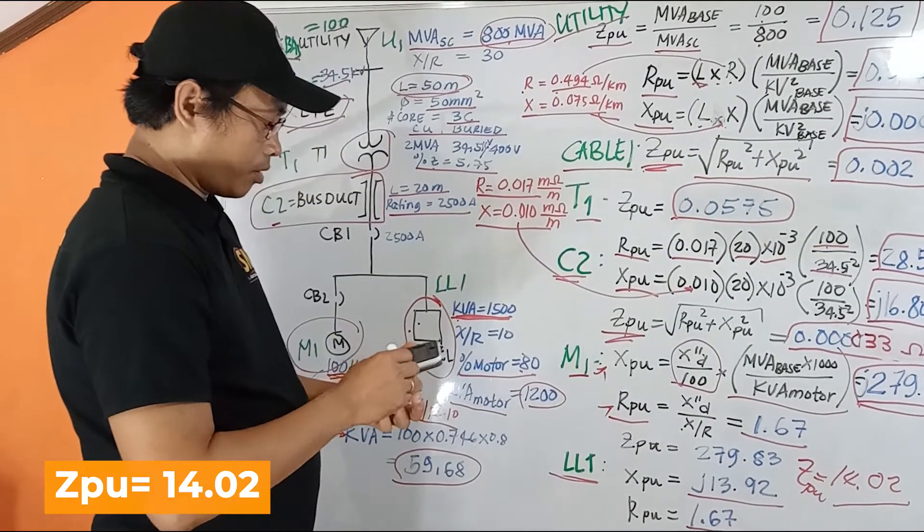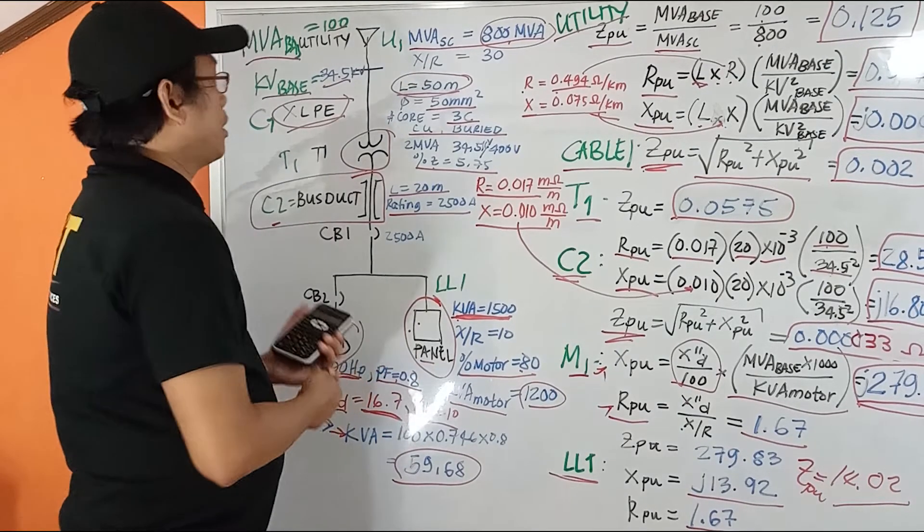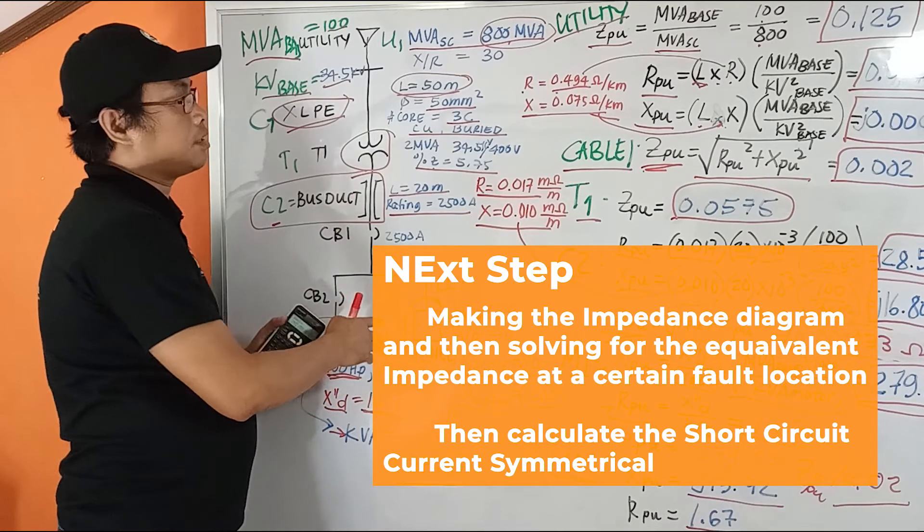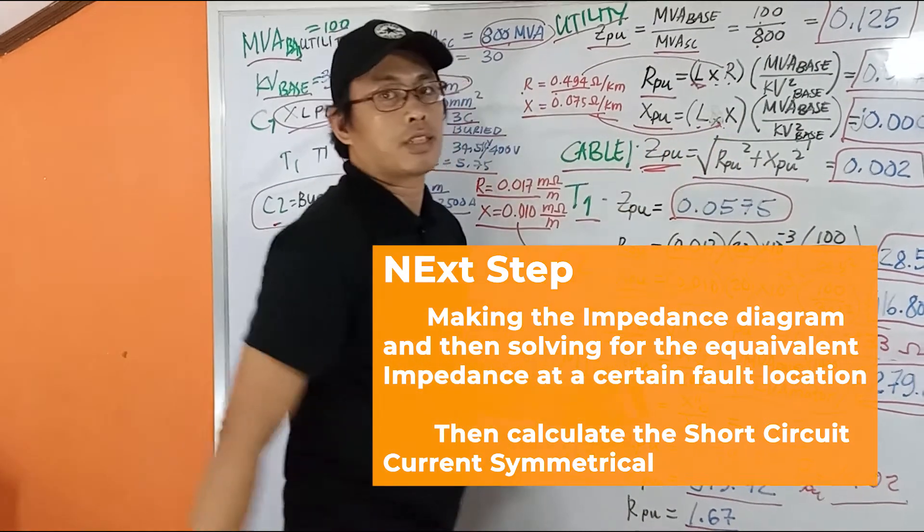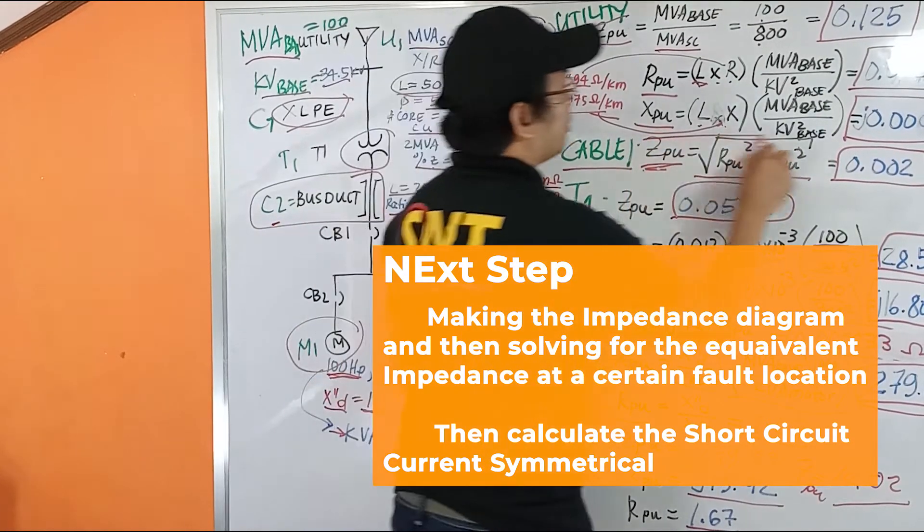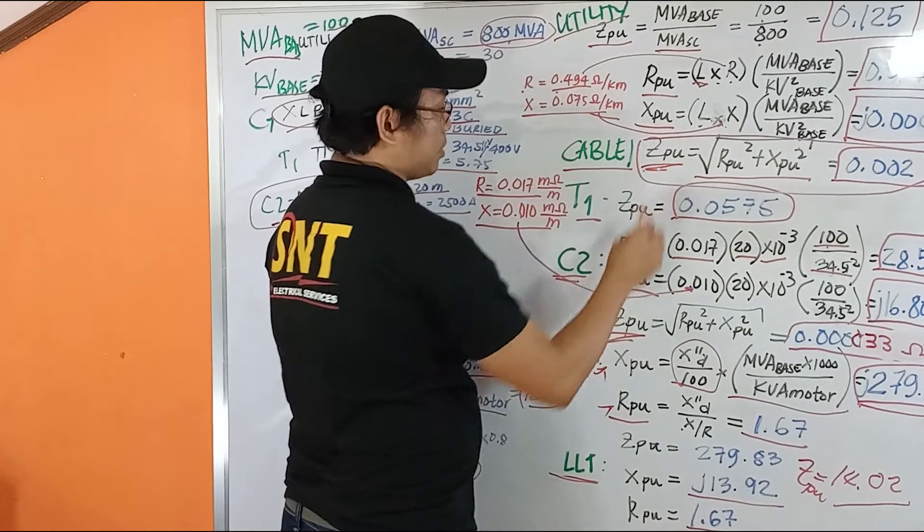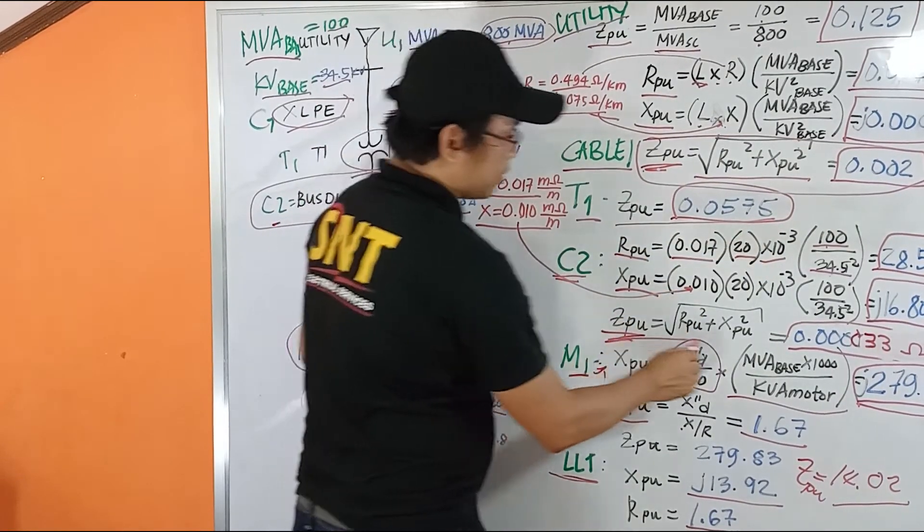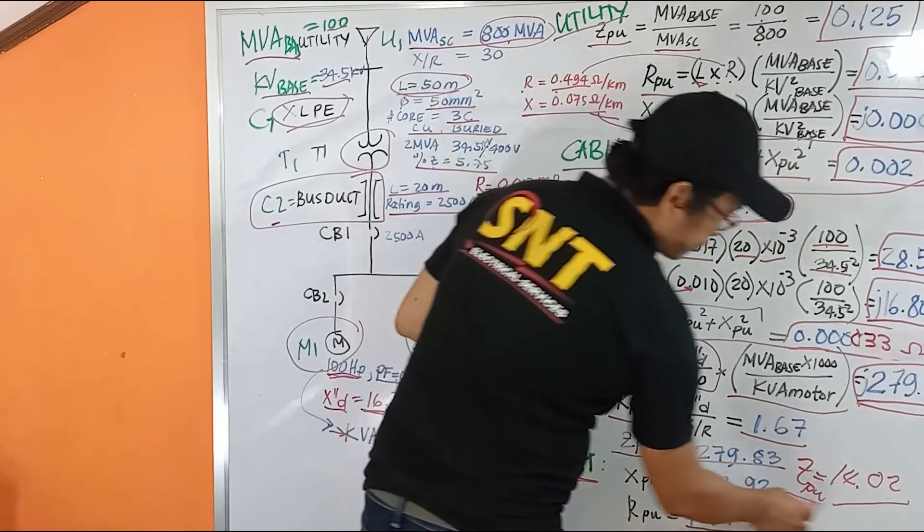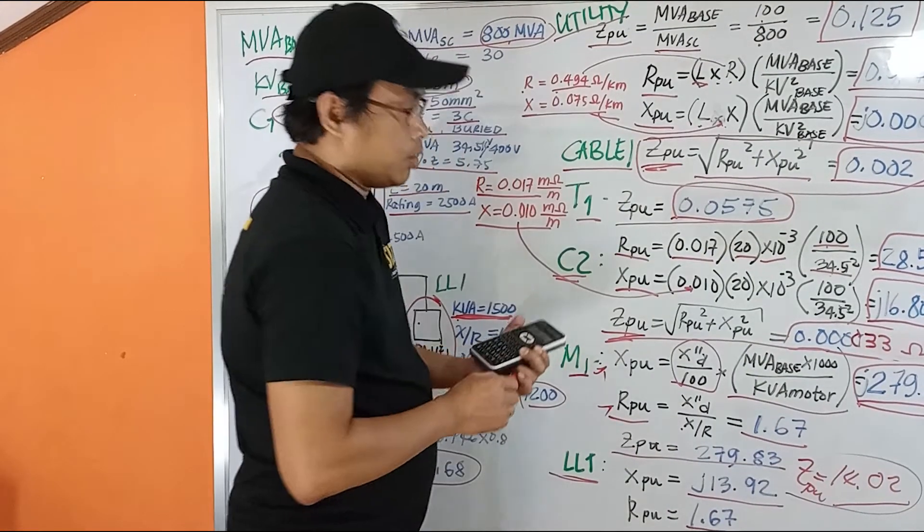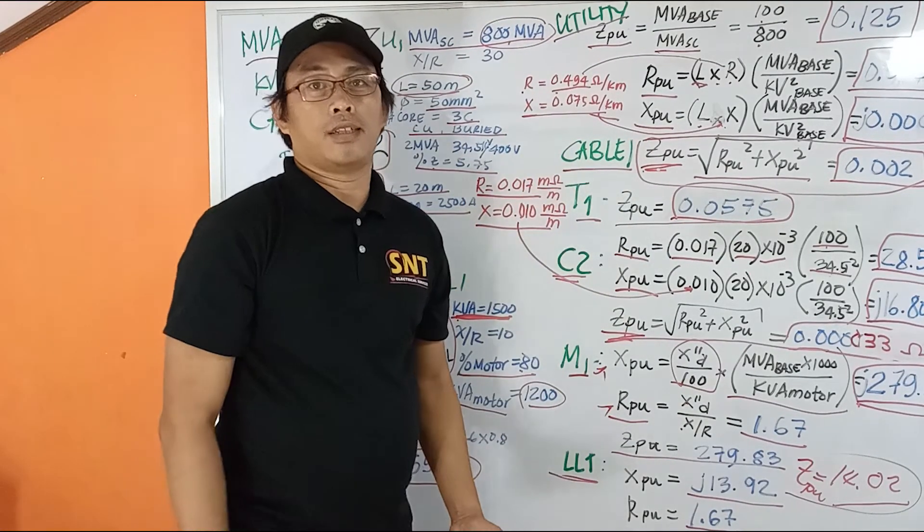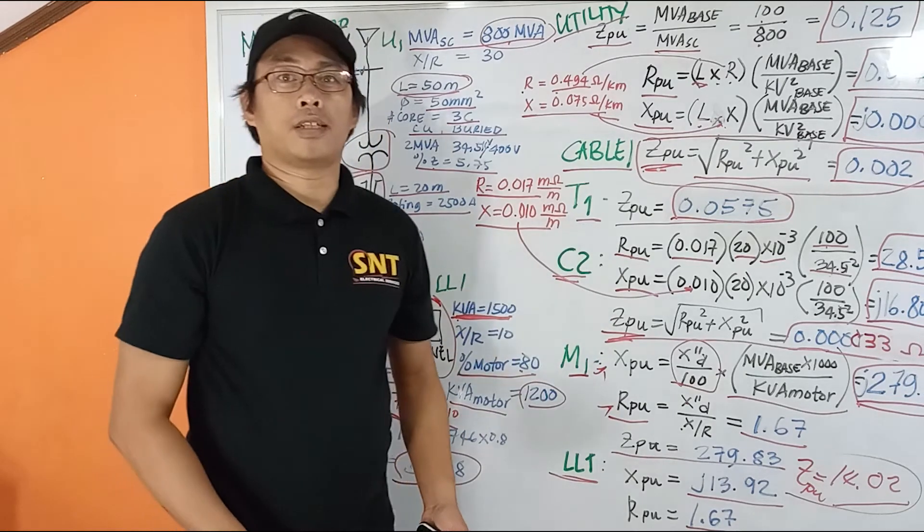So what does this mean all about? After getting all the data or the information on our single line diagram, then we use this formula and substitute it. Then we get all our per unit impedance. We need per unit impedance here, here, and our per unit here. Then we do the impedance diagram after getting all the data, or calculated values.